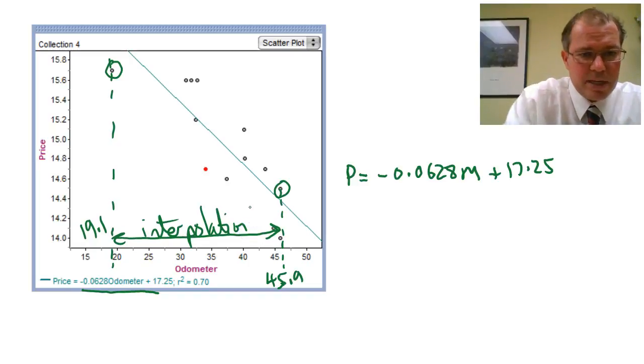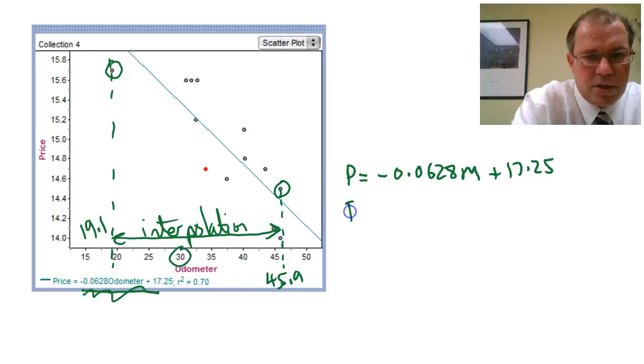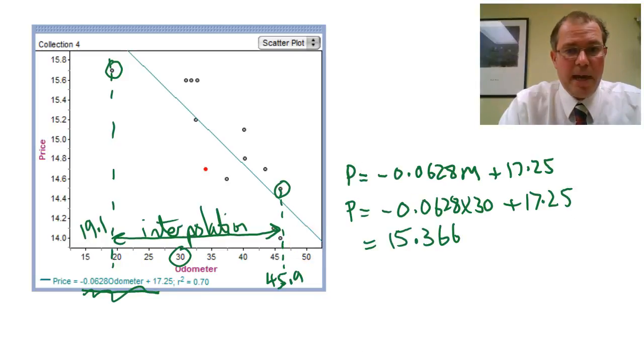So let's do an example. Let's imagine we've got a car which has done 30,000 miles. So 30 in this graph. And we can use our formula. So the formula, which is written at the bottom here, I've copied out nicely. So the price would be minus 0.0628 times the 30 plus 17.25. So I'll just work that out. So we get a price of 15.366, which means, of course, because that's in thousands of dollars, means $15,366. So our line of best fit, our least squares line, is predicting that if a car's done 30,000 miles, it will cost $15,366. Question.